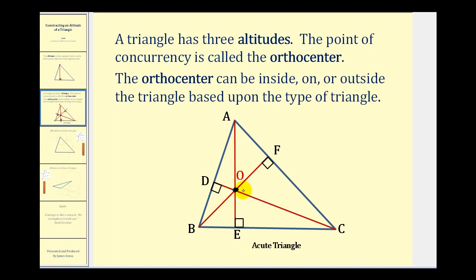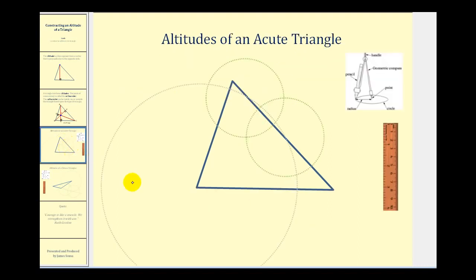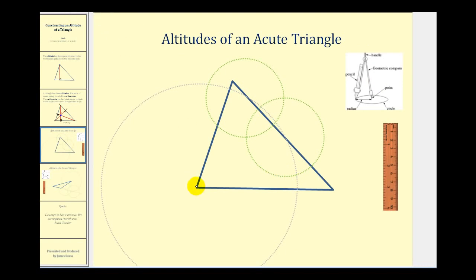Now we're going to take a look at constructing an altitude for an acute triangle and an obtuse triangle. For these constructions we're going to need a compass and a straight edge. For this example we have an acute triangle and we'll construct the altitude from this vertex.